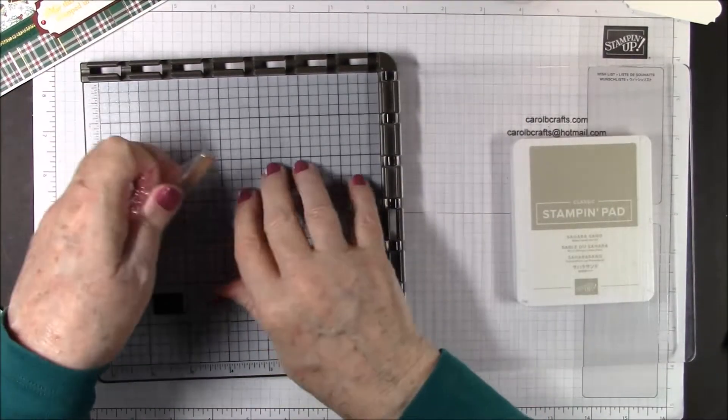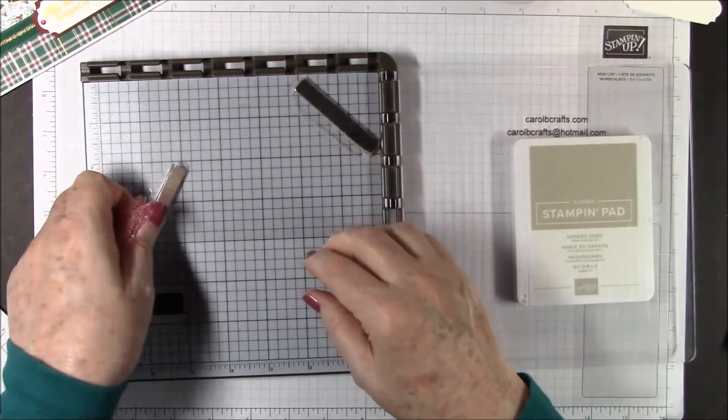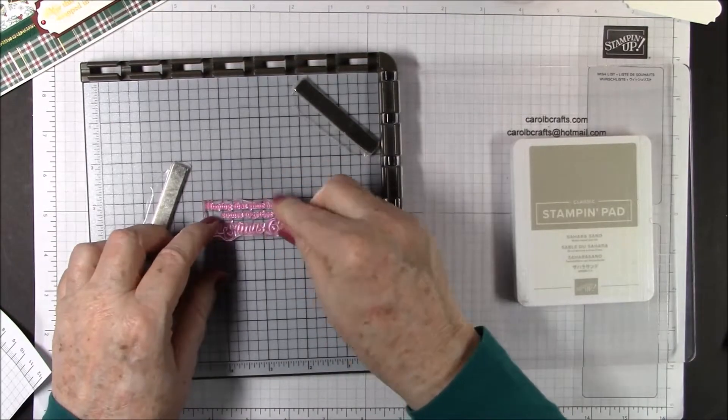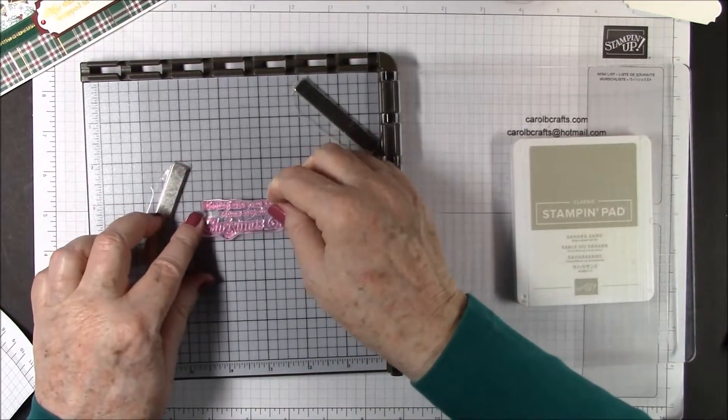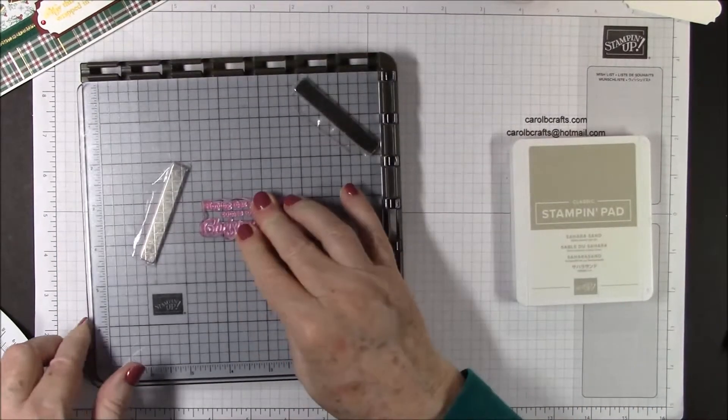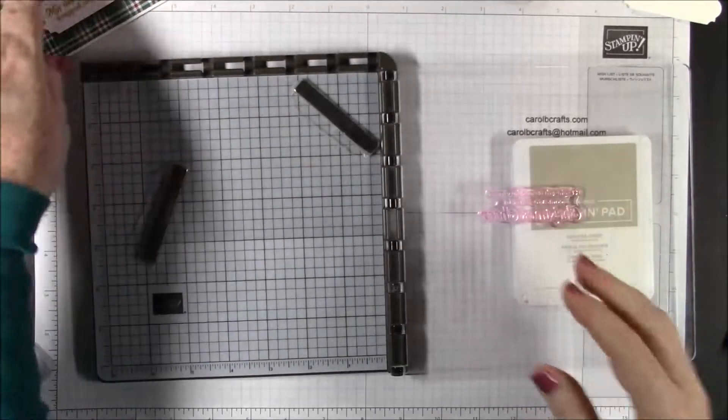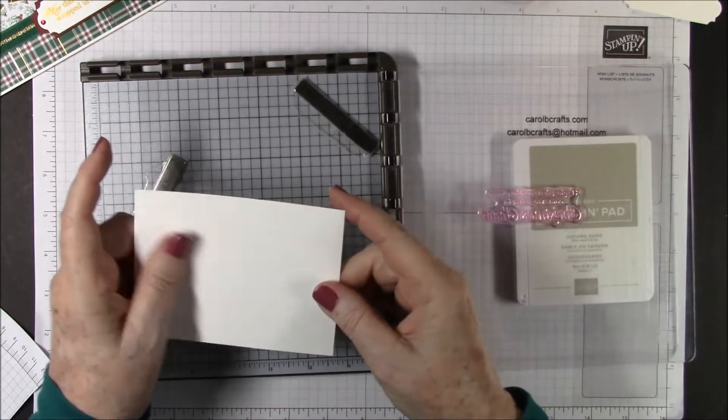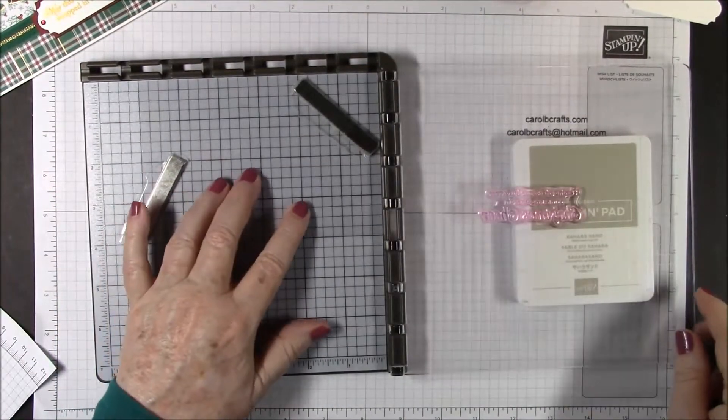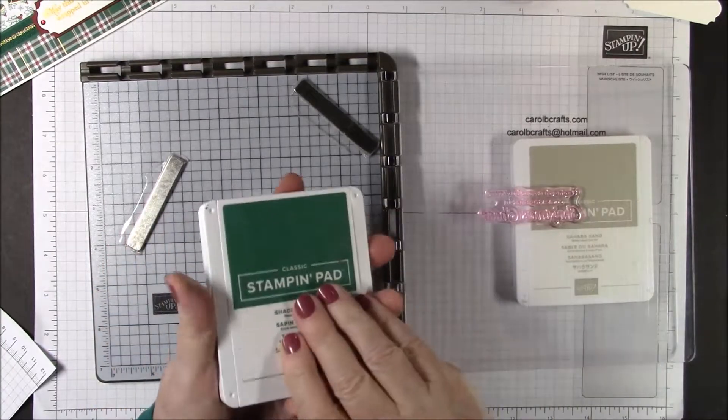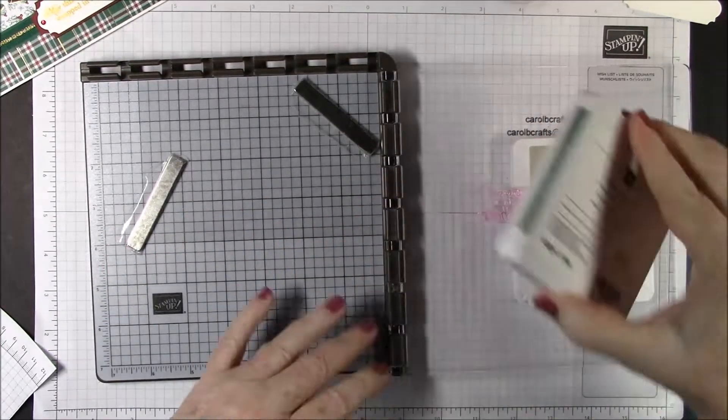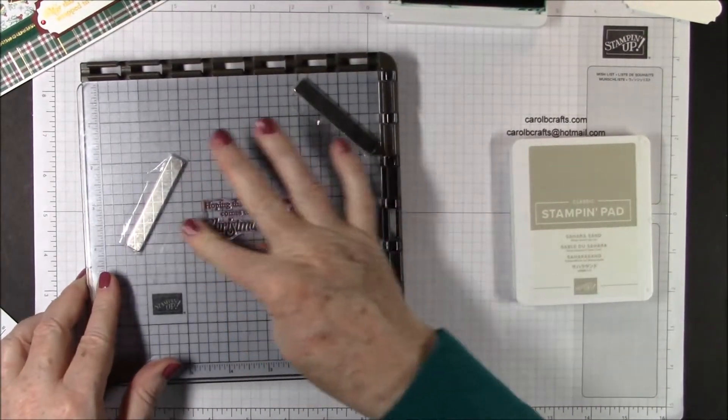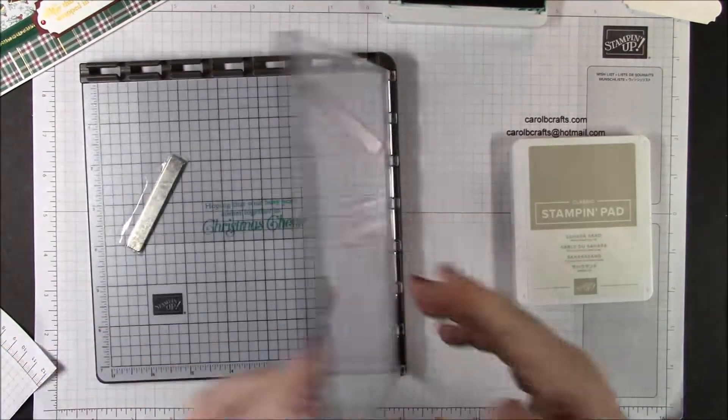We've cleaned off our plastic sheet and we're going to put that in place and put our stamp down. This is a photopolymer stamp, so you don't have to do it this way. You might feel comfortable just laying your stamp directly on your cardstock, but I just do this to make it easy on myself and get it right the first time.